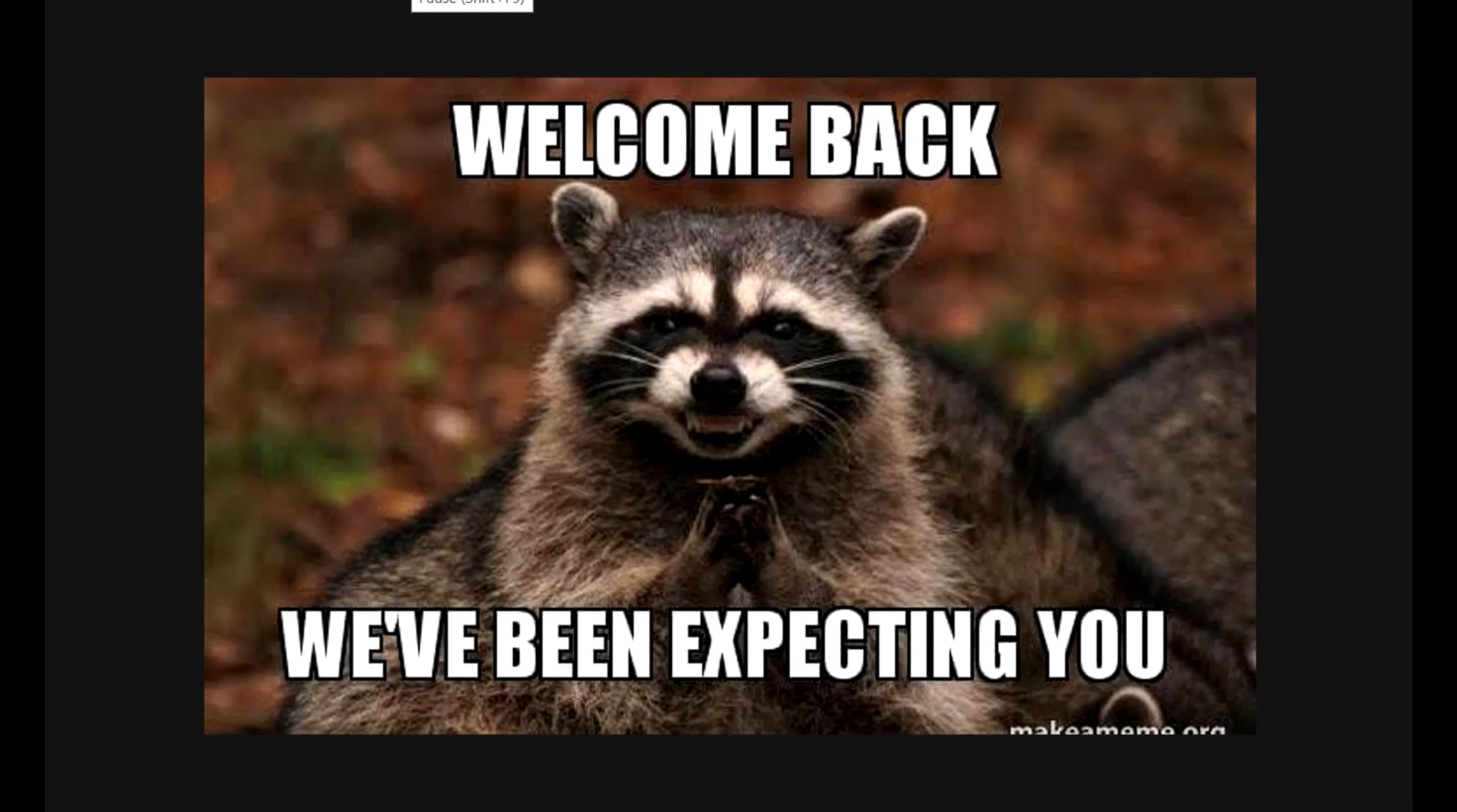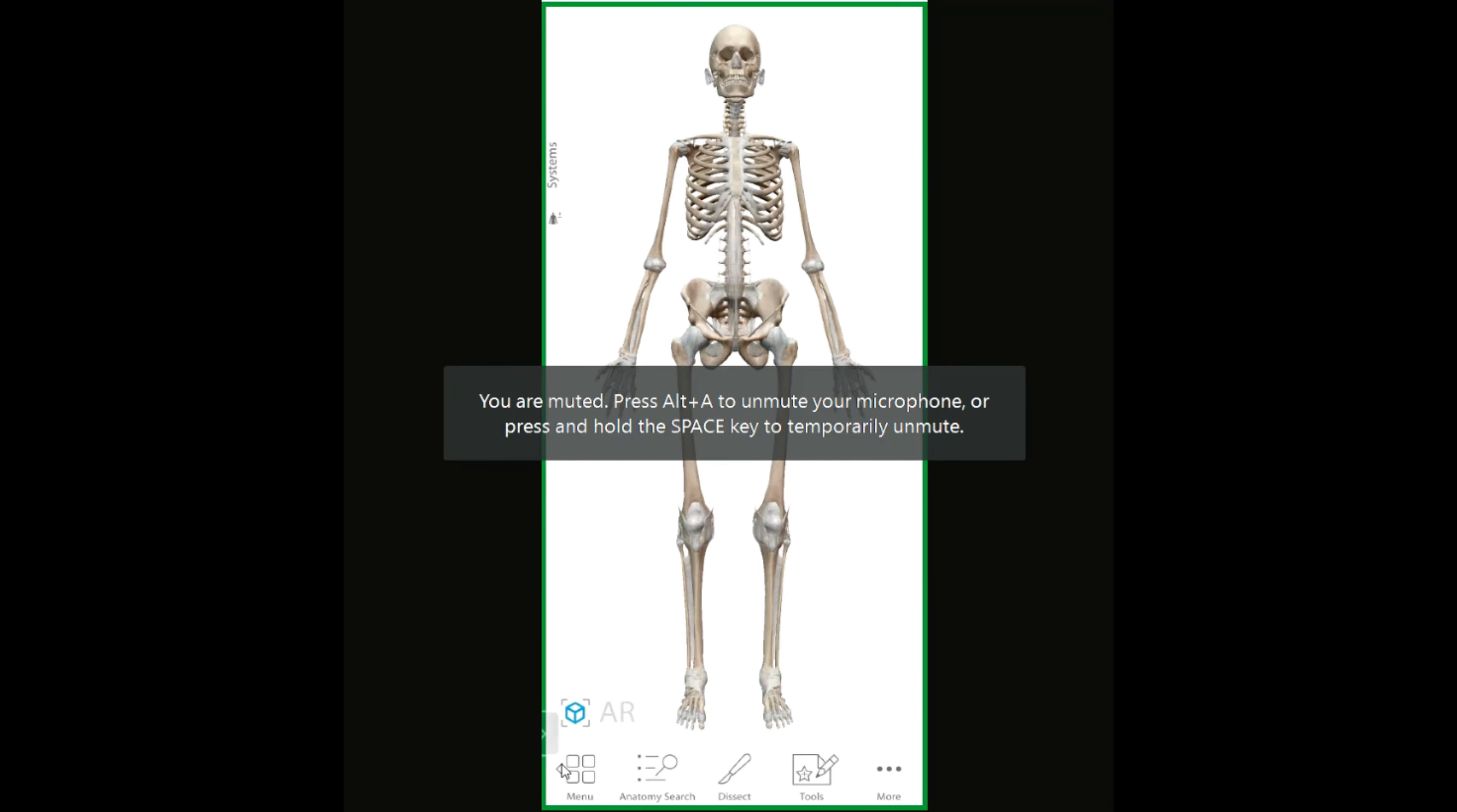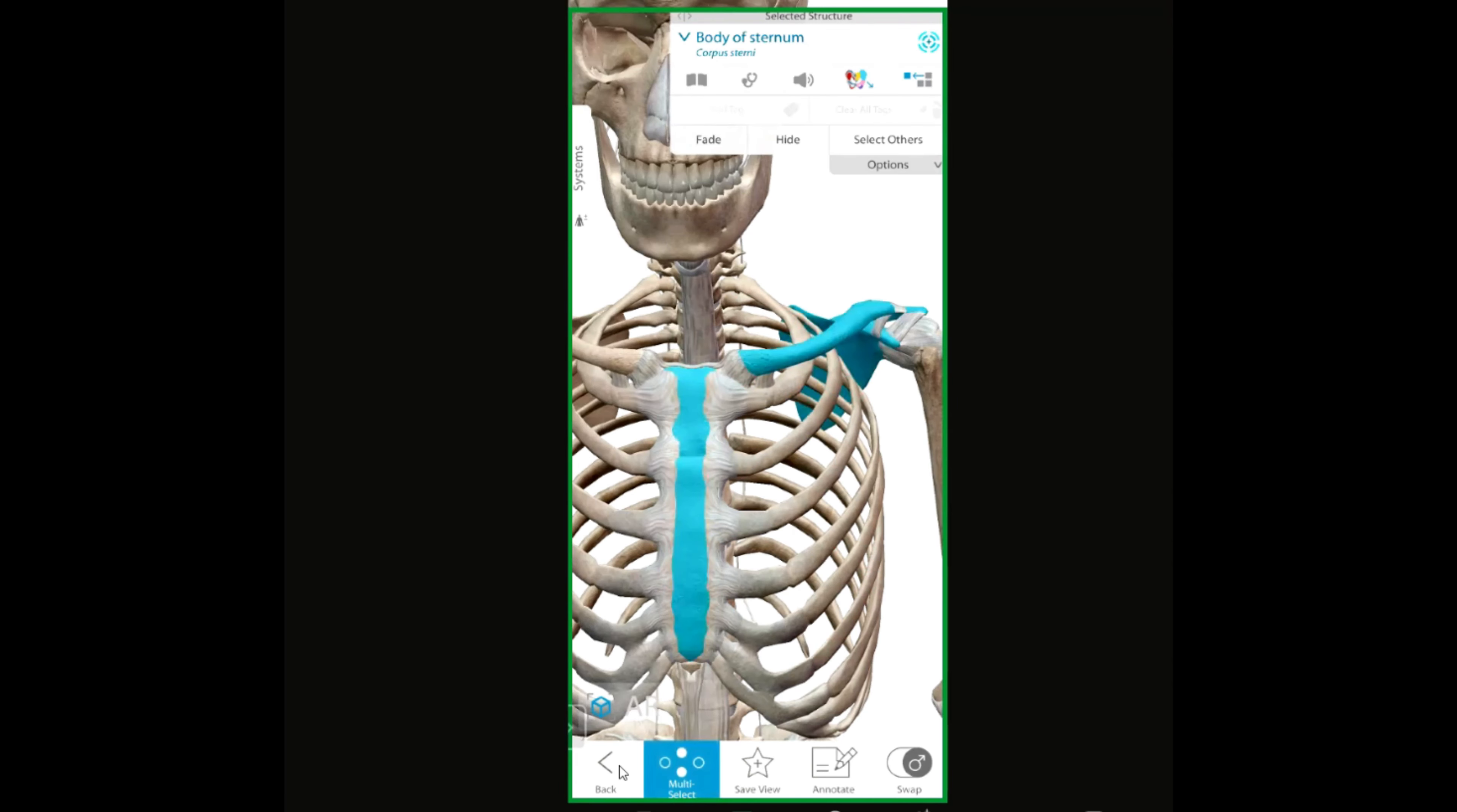Assalamu alaikum anatomists and welcome back to yum notes. Let me tell you the shoulder girdle refers to the clavicle and the scapula, as you can see here is the scapula on the back and that's the clavicle beside a bone here named the sternum. Now how these three bones are connected together, that's right by joints.